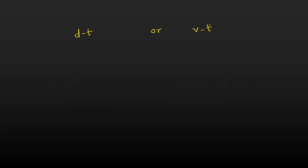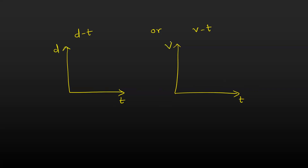Whenever we plot a graph — you learned in grade 9 — you can plot distance versus time or velocity versus time. In both cases, time goes on the x-axis and distance or velocity on the y-axis. To choose, you need to understand which variable is dependent and which is independent. The independent variable always goes on the x-axis, and the dependent variable goes on the y-axis.